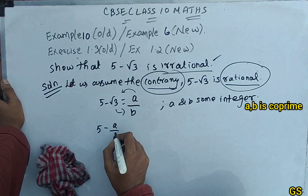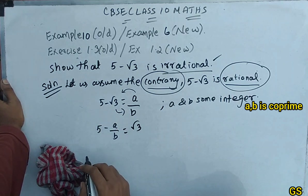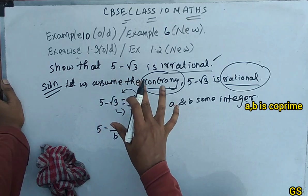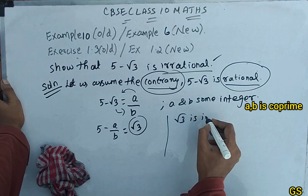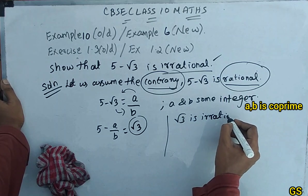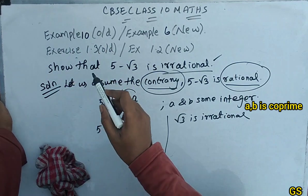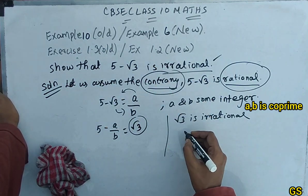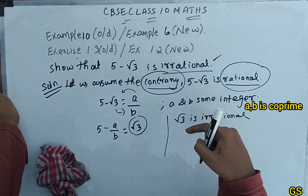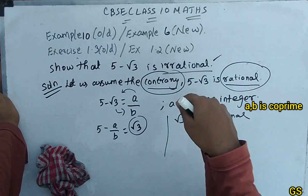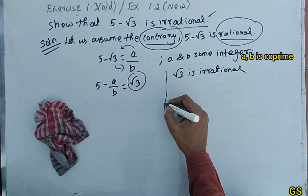So, rearranging: 5 minus a/b gives us √3. Now, in this step, you need to recall that √3 is irrational — that is the next example. In the old textbook it is example 9, and in the new textbook it is example 5. That proof is already solved and given in the description.